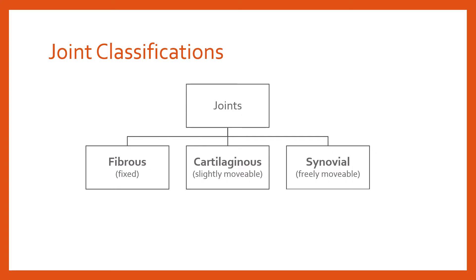So the three classifications of joints are fibrous, cartilaginous, and synovial. Later in the video, we'll look in more detail at synovial joints, noting that there are six different types. In terms of vocabulary, classifications means fibrous, cartilaginous, and synovial, while types refers to the different kinds of synovial joint. The classification is synovial; there are six types of synovial joints.